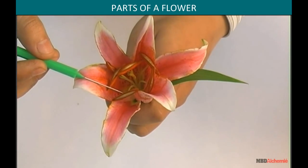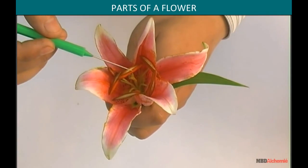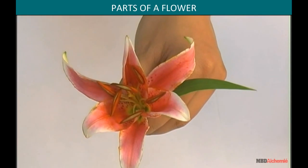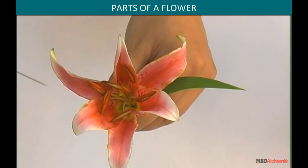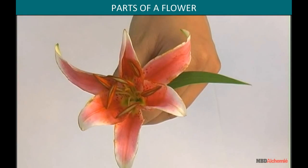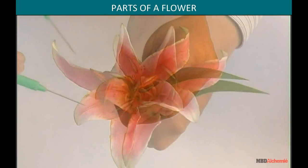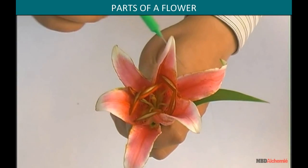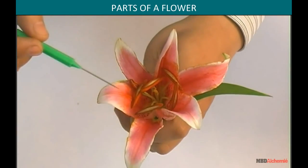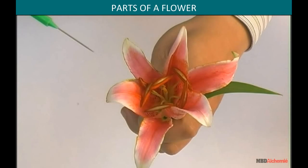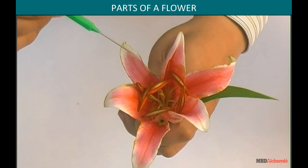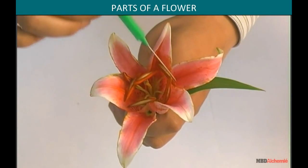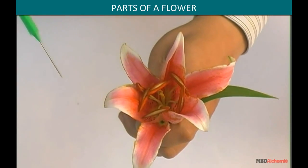We are going to discuss about the different parts of the flower. These are the petals that form the outer whorl of the accessory organs of the flower. The lily flower has six petals. These are arranged in two whorls — three form the outer whorl and the remaining three form the inner whorl.